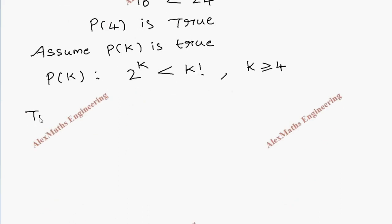Now, to prove P(k+1) is true, the expression for P(k+1) is 2^(k+1) less than (k+1) factorial.